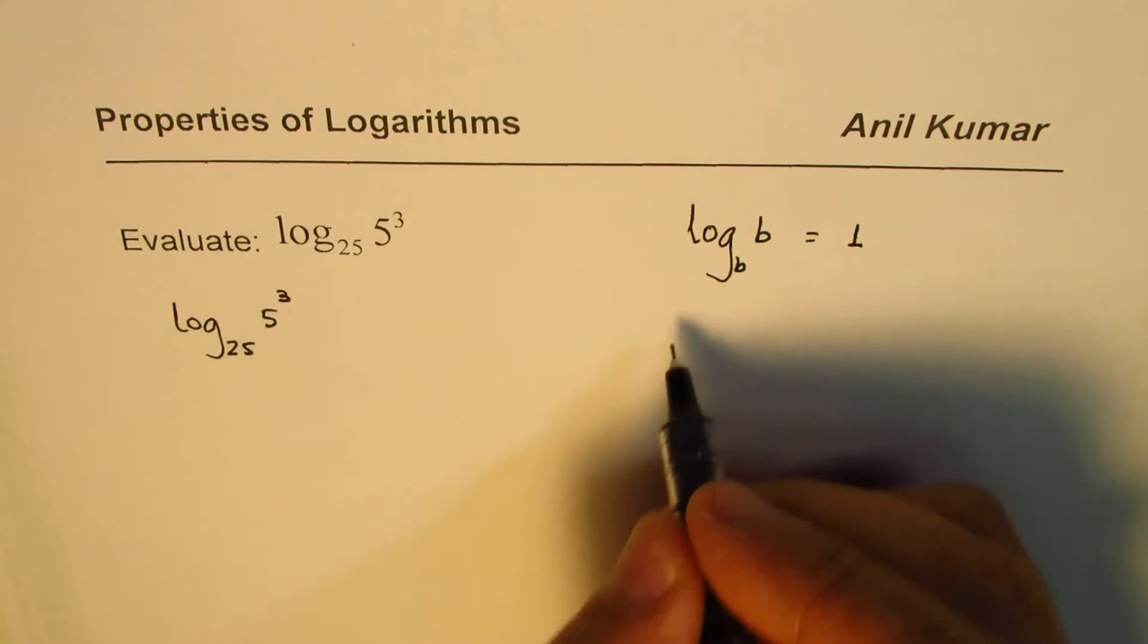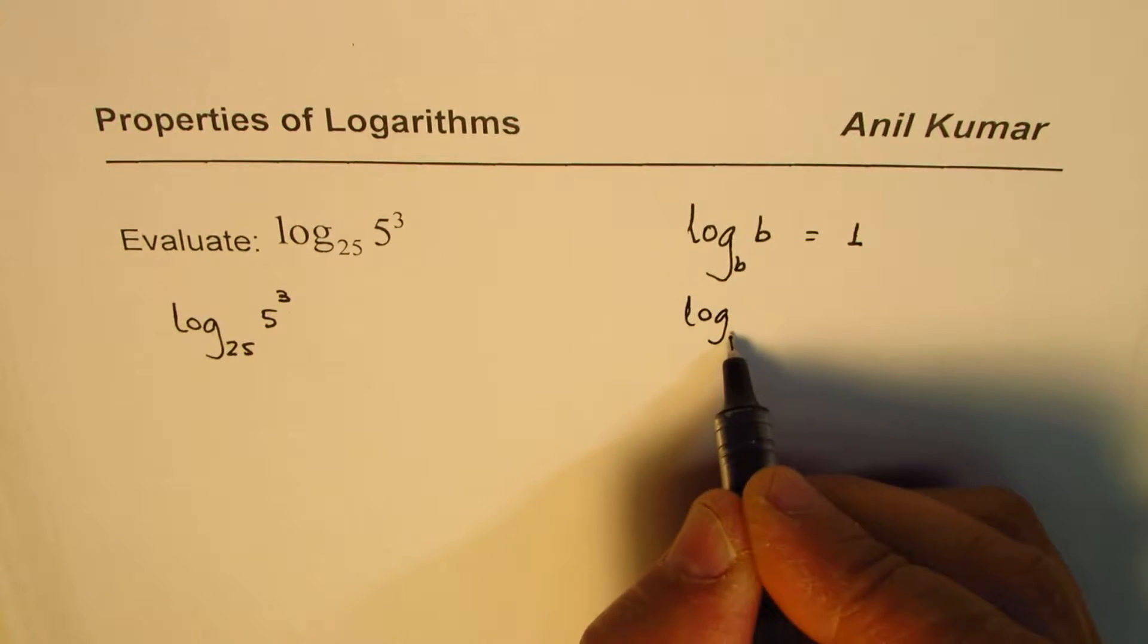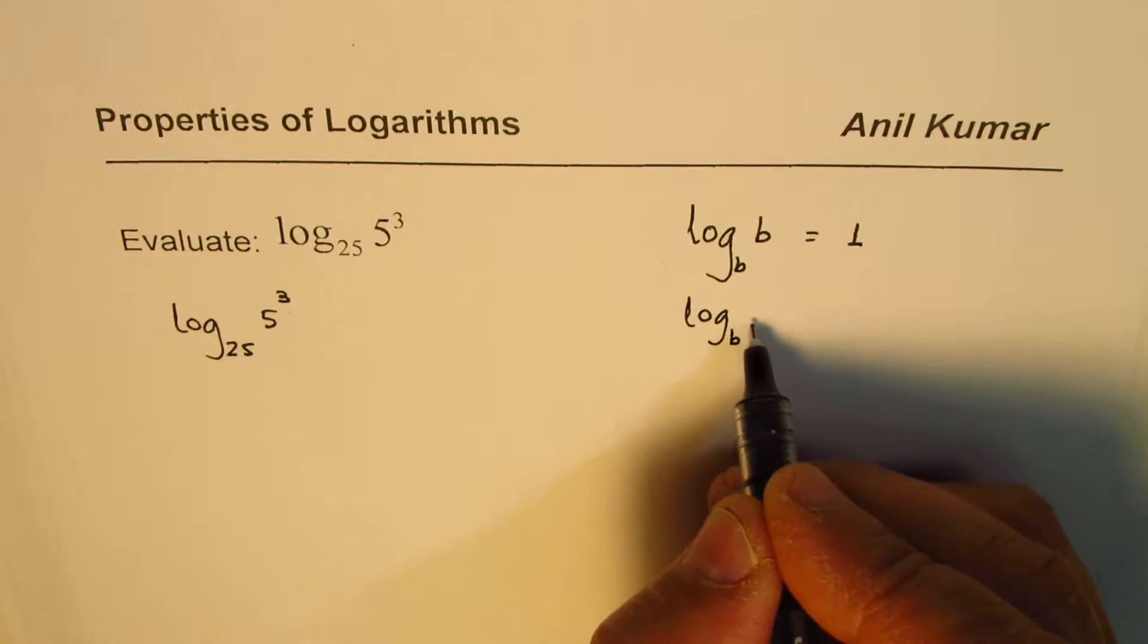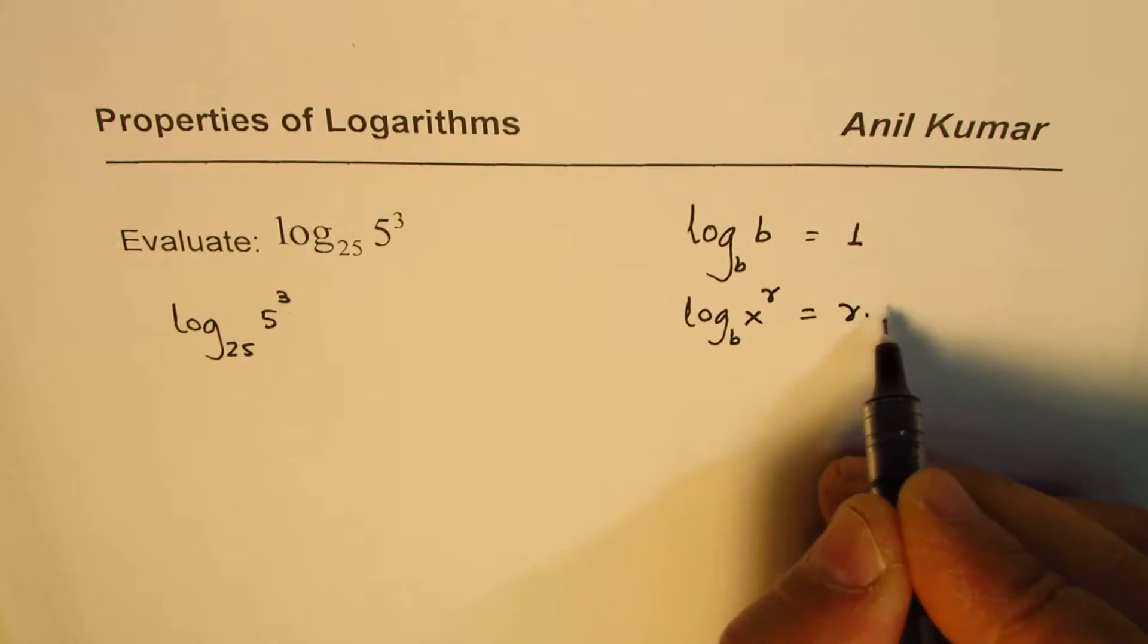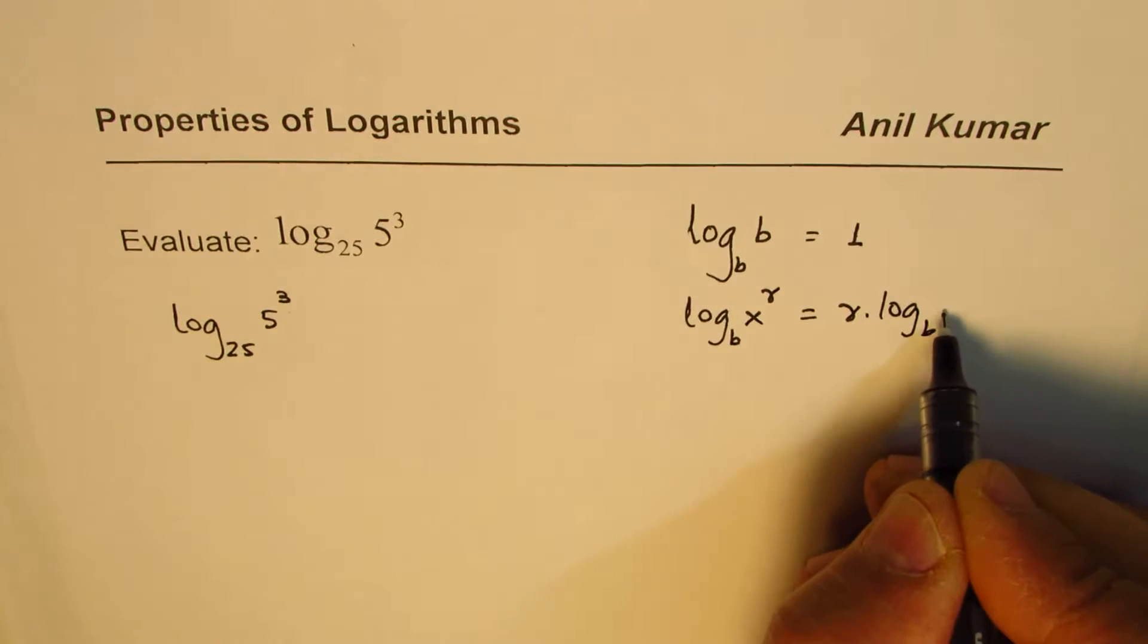And the second property is log to the base B of, let's say if I have any number x here and r here, we could write this as r times log to the base B of x.